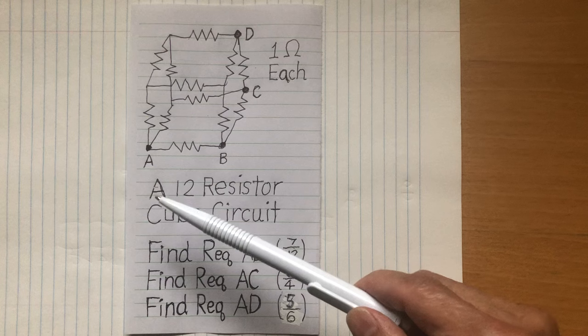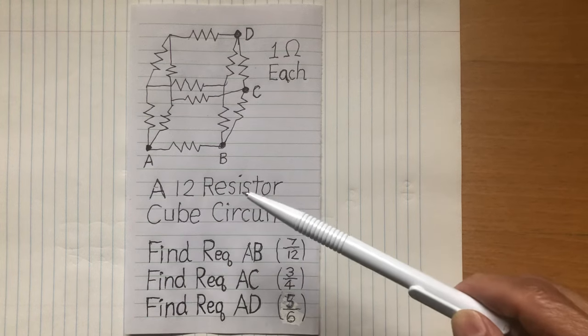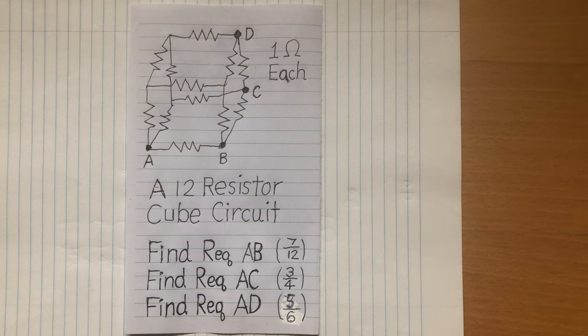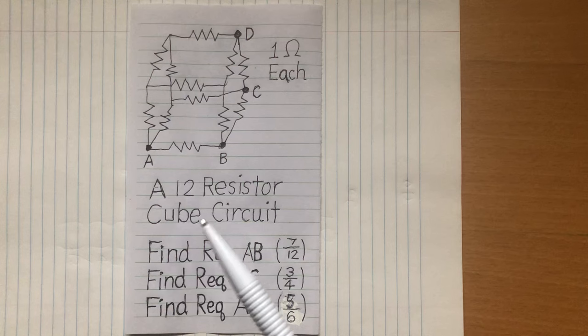This is a 12 resistor cube circuit. What is the question? I have three questions.